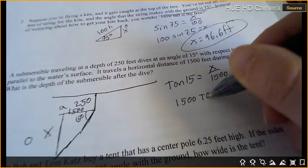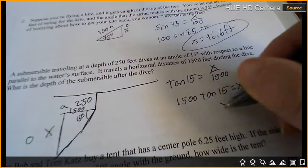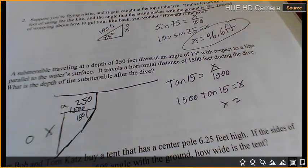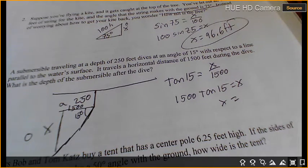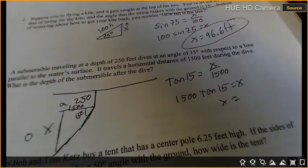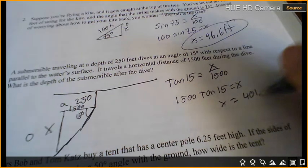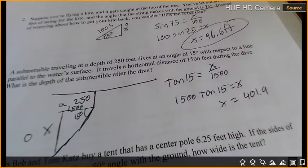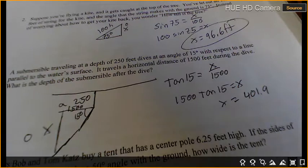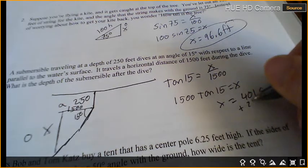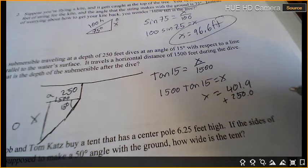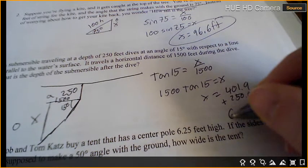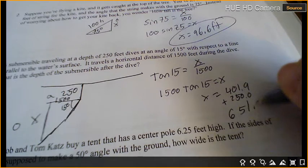So tan of 15 equals opposite x over adjacent 1500. So we times 1500 on both sides. We get 1500 tan 15 equals x. So x equals 401.9. So that's how far down we are. Or what else do we have to do? Plus 250.